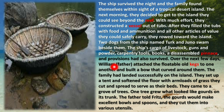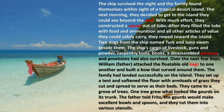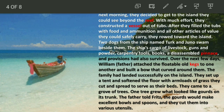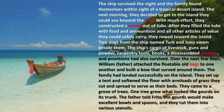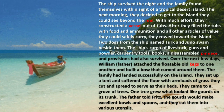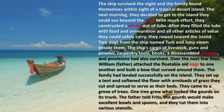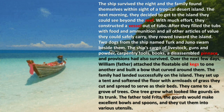William, the father, and Elizabeth, the mother, attached floatable old kegs — barrels — to one another and built a raft. The family landed successfully on the island and set up a tent there, laying soft grass on the floor so that when they slept they wouldn't be hurt by rocks and sand.